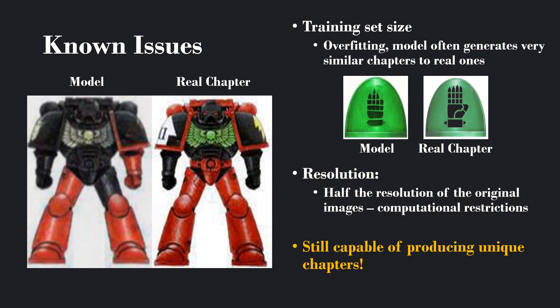Although it is still capable of producing unique chapters. This guy on the left — I guarantee that is a unique Space Marine chapter generated by my model. That combination of colours is unique and completely generated by AI, which learned from real ones, even though it is quite close to a real chapter. It's clearly different in terms of the colour combinations. It's kind of asymmetric — it's got a red glove on one side — it's a bit weird, but I kind of like it.